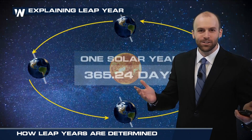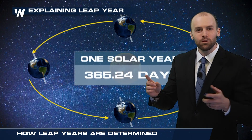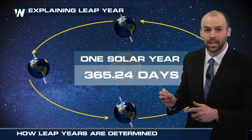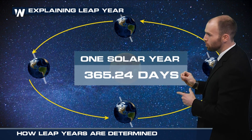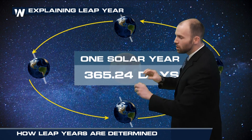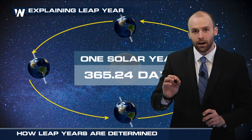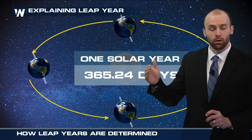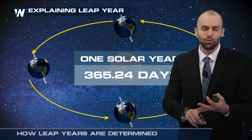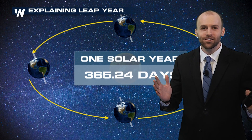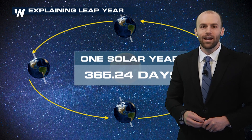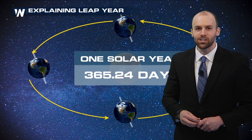Confused yet? Yes, so am I. But it goes back to the number of days, hours, and seconds it takes to get one full rotation around the sun — it's not exactly a quarter. So there's just a little missing time if you were to do it every four years, and that's where the 100 and 400 rules apply. Nonetheless, enjoy the extra day this month. For Weather Nation, I'm meteorologist Steve Glacier.